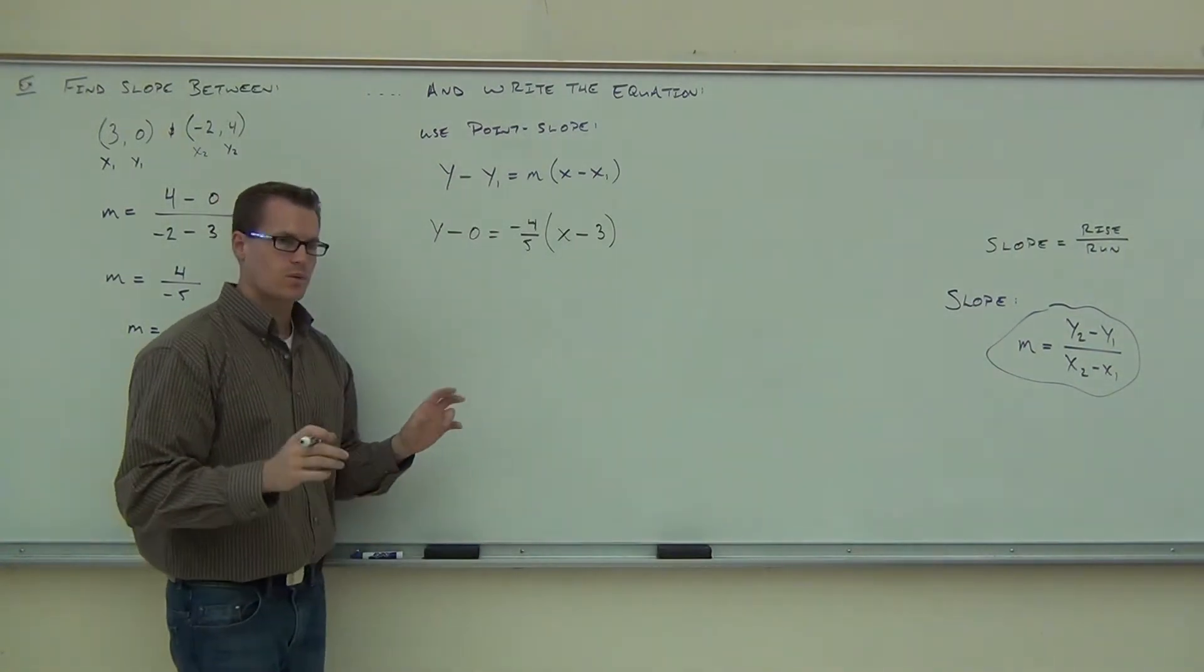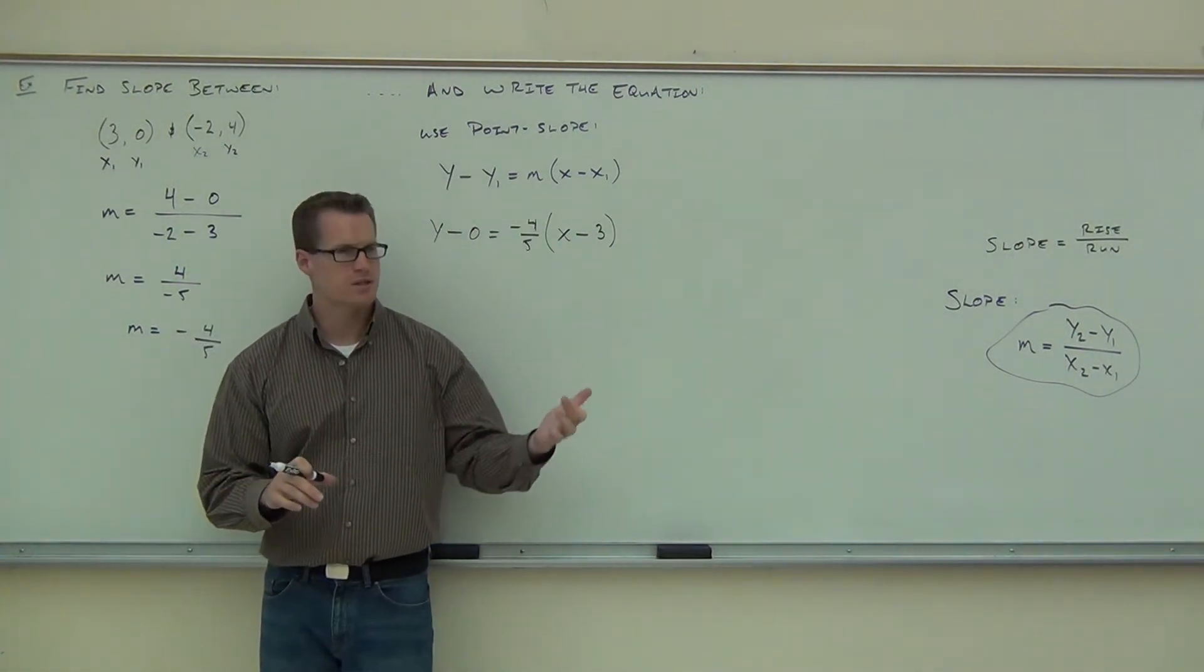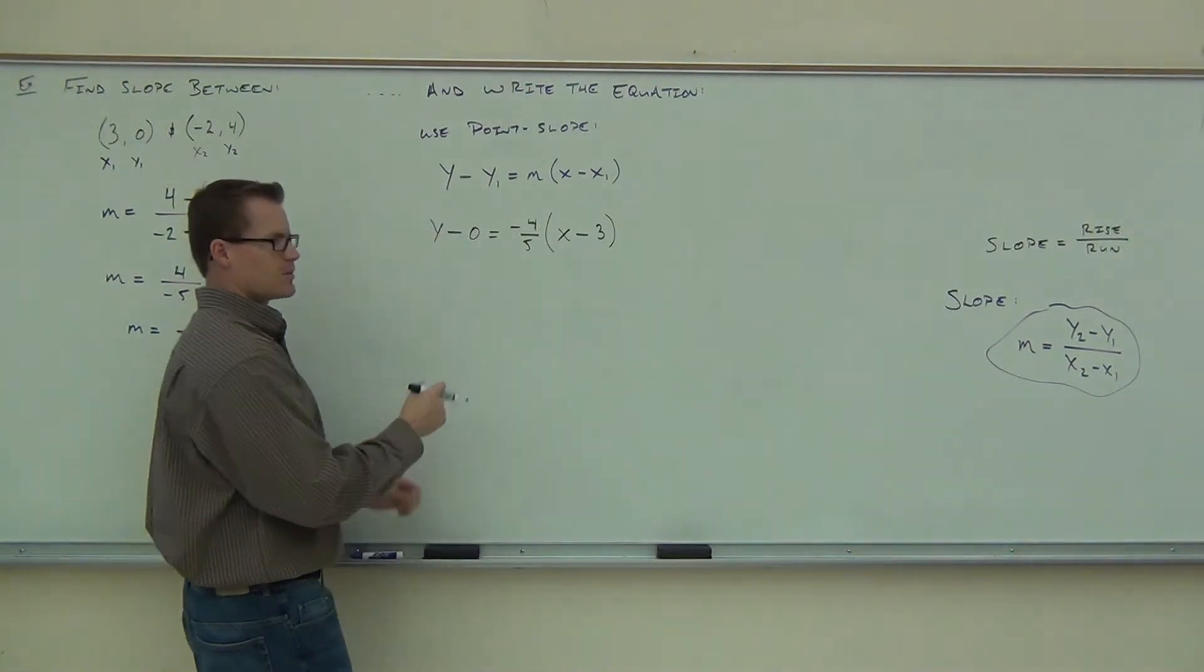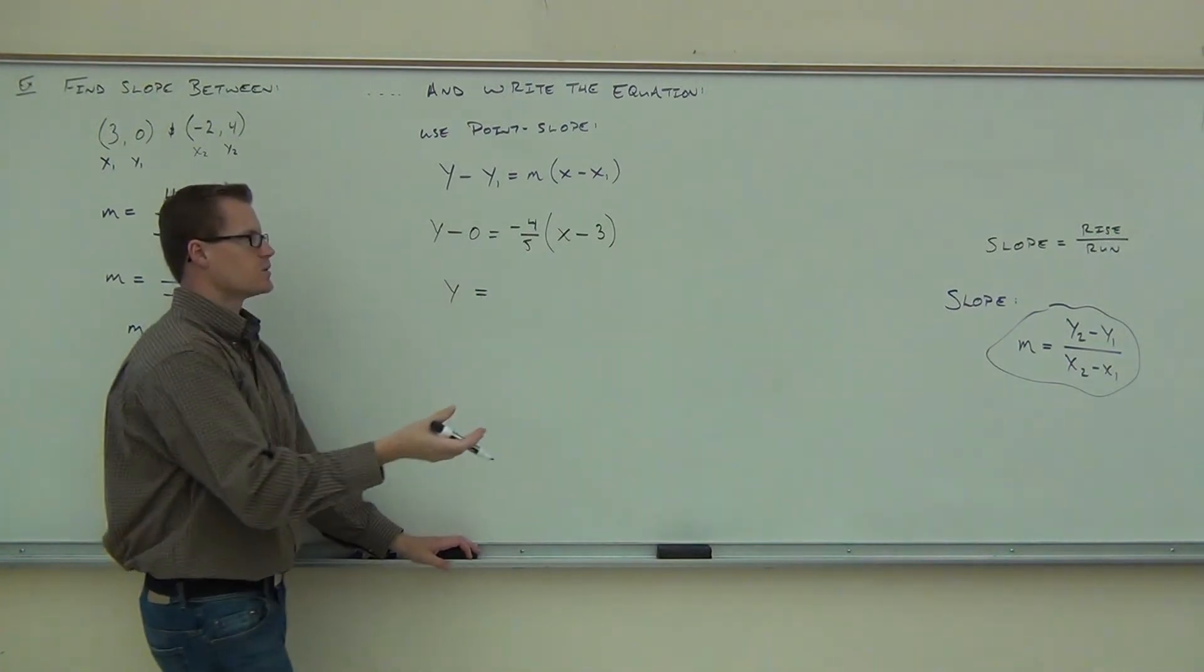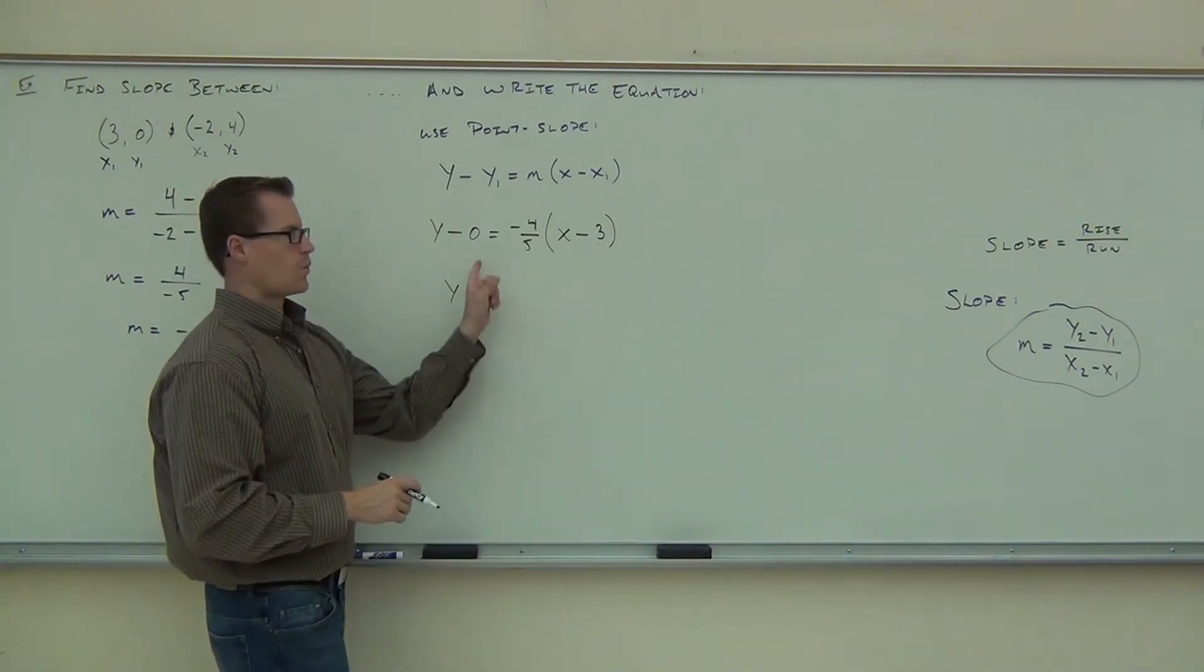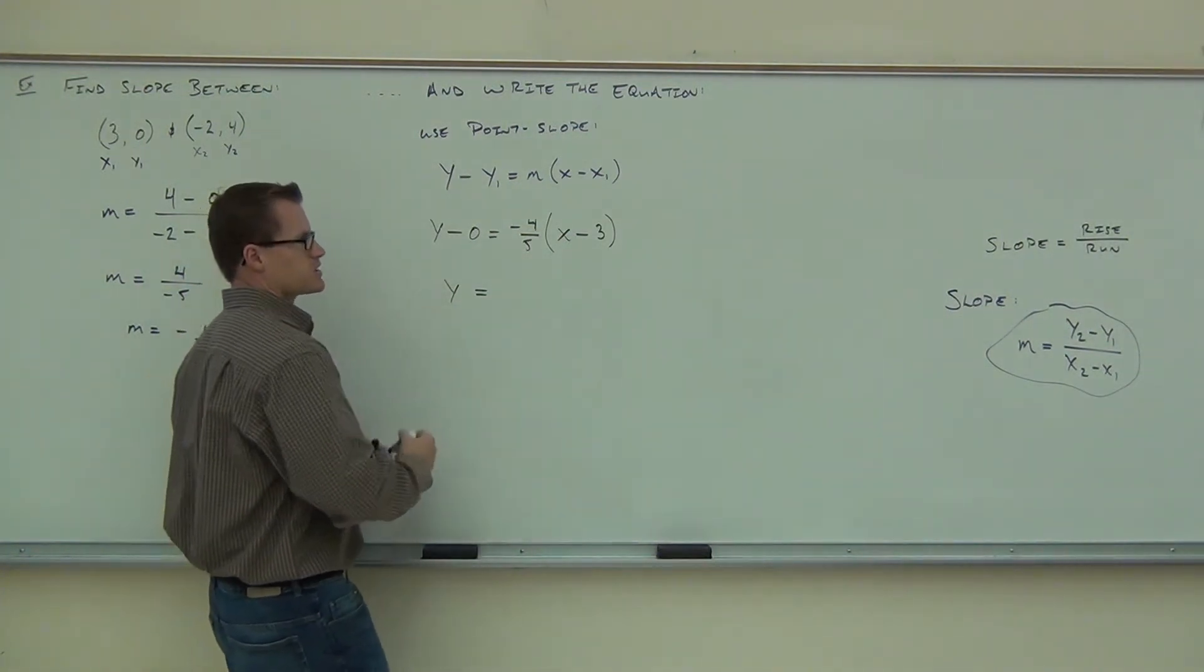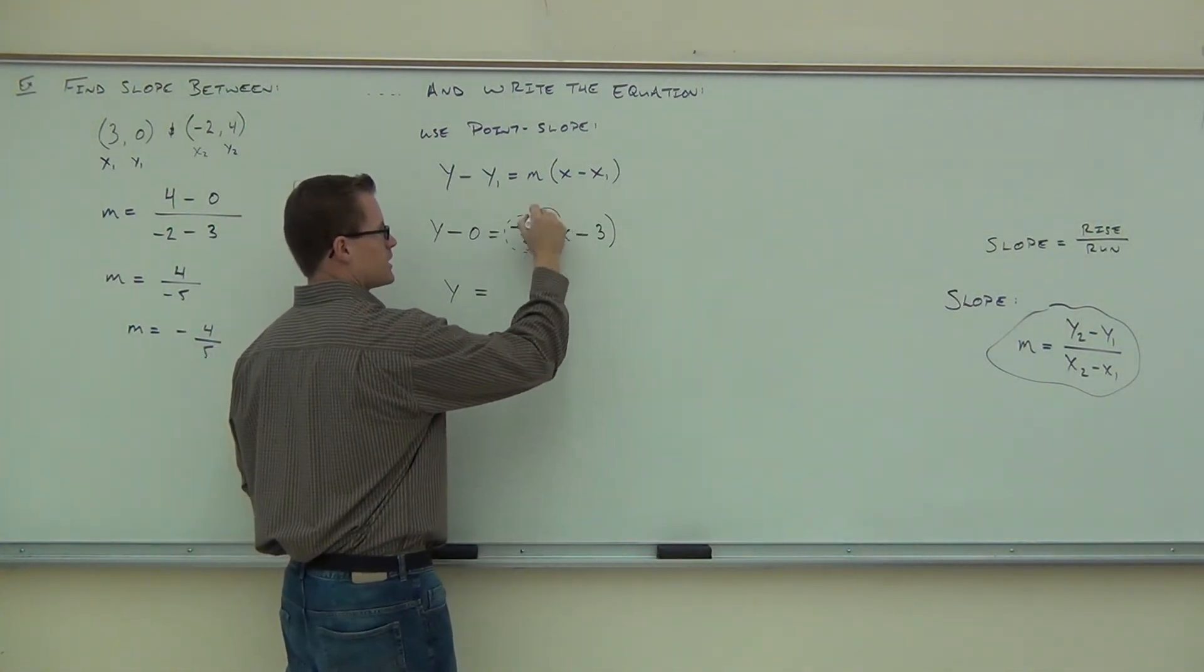Now we do some simple math because what we're going to try to do is take this from point-slope and get this into slope-intercept. The reason why we do that is because slope-intercept is generally easy to graph. Y minus zero, that's just y. How do we do this? That's pre-algebra stuff, but it's important to get this right. How do you distribute? You take the number outside your parentheses with the sign.